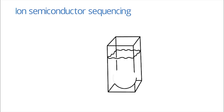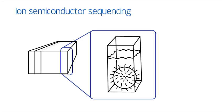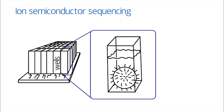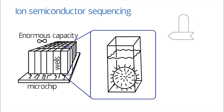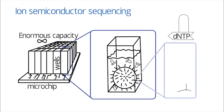Next up, ion semiconductor sequencing. In this technique, emulsion PCR beads are loaded into a well on a microchip, a chip like the one in your smartphone. These chips have an enormous capacity and contain millions of wells that accommodate millions of beads. Interestingly, ion semiconductor sequencing uses normal DNTP. Yes, no modification at all. A DNTP base, say A, is loaded to the well one at a time and binds if it's complementary to the DNA strand.